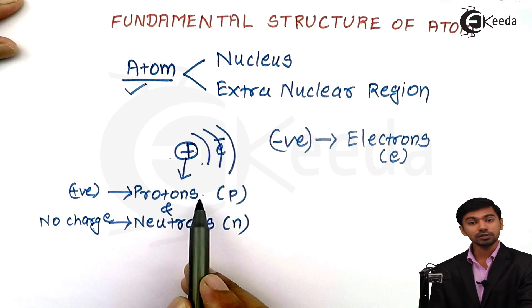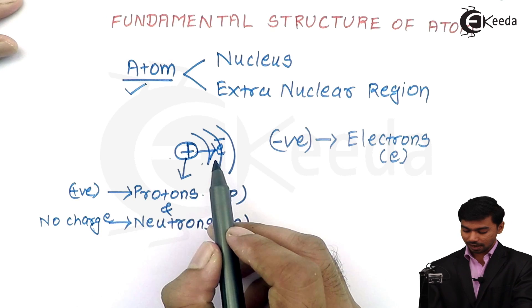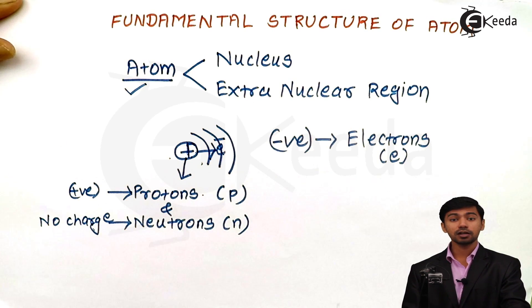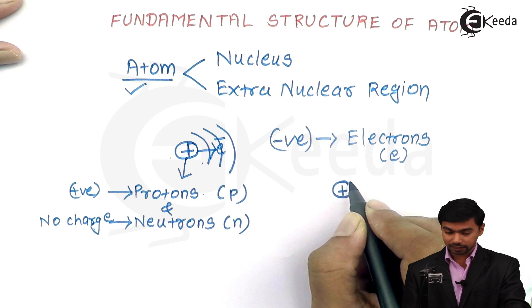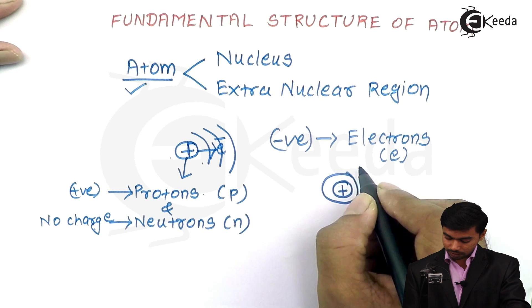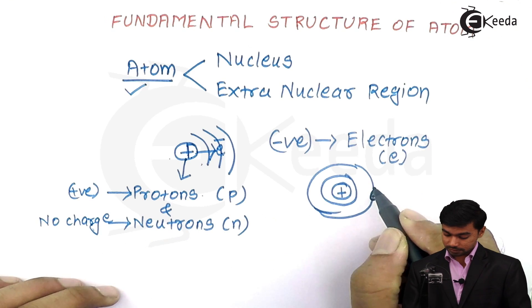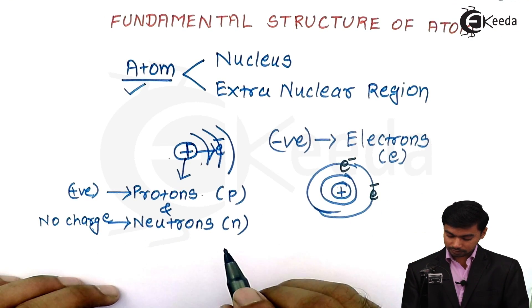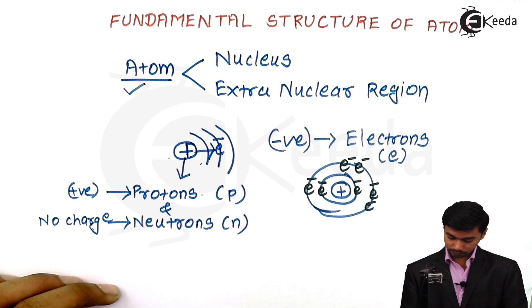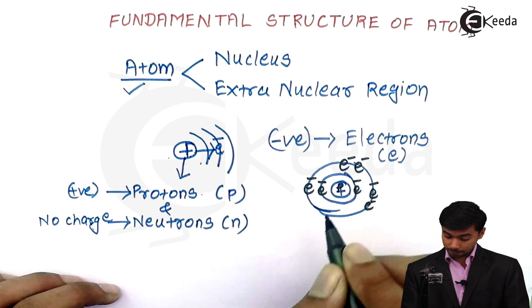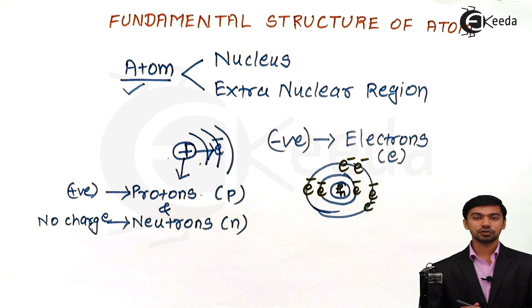These negatively charged electrons are continuously revolving around the nucleus due to the force of attraction between the positively charged nucleus and the negatively charged electrons. Based on these fundamental parts, we have a complete structure of an atom: the nucleus at the center containing protons and neutrons, surrounded by the extra-nuclear region which contains the electrons. This is the fundamental structure of an atom.